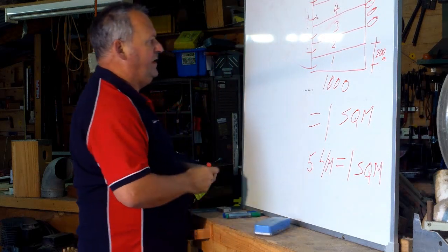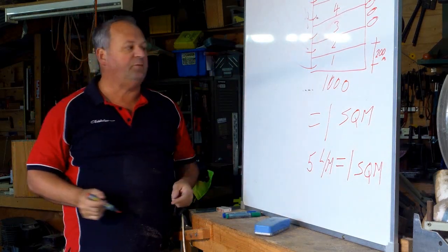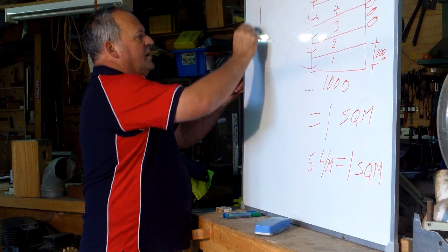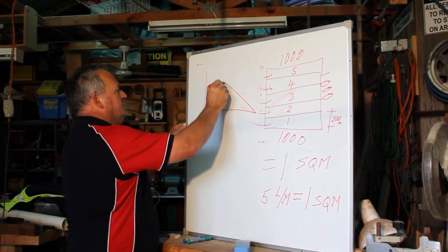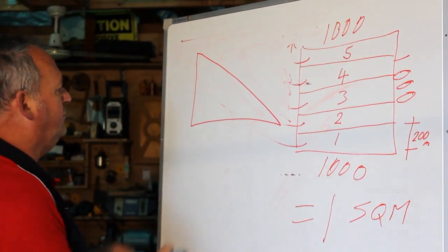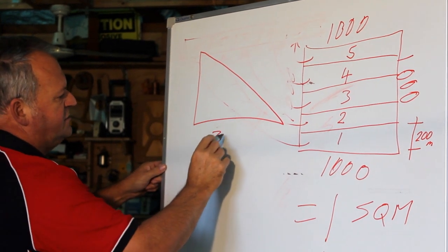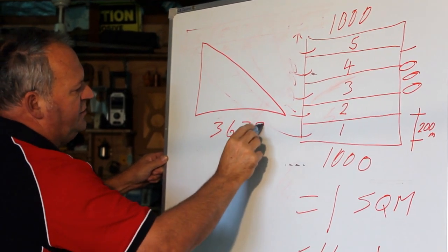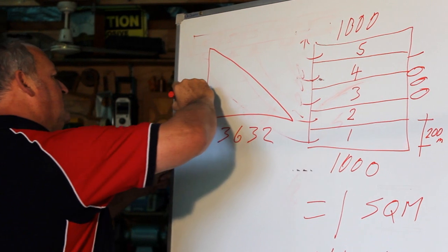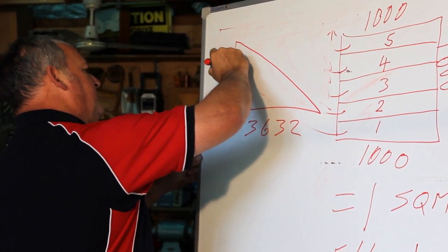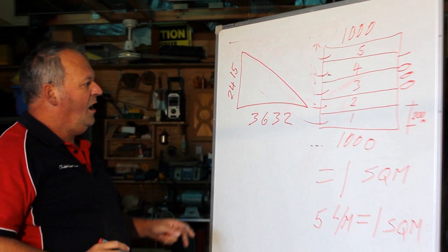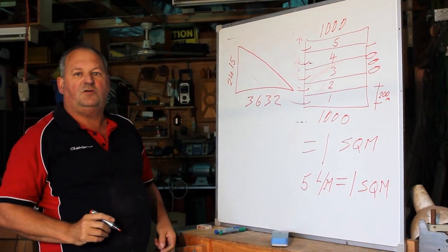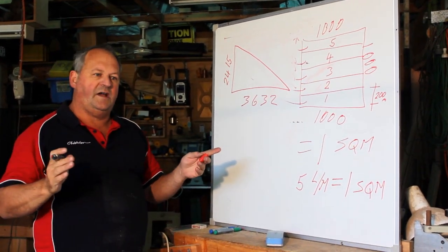Now, the next part we start off with is a triangle. And our triangle is 3,632 and it's 2,415. And we need to work out the area of the triangle.